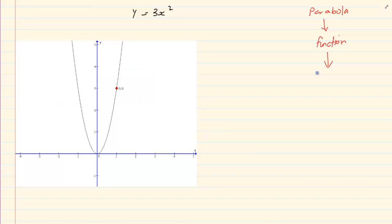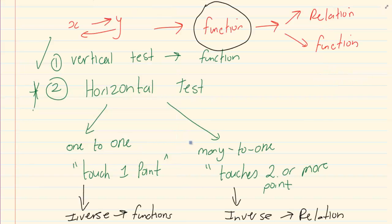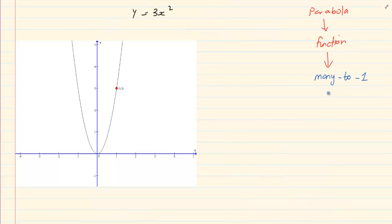When it is touching two points then it is many to one. From our discussion we know that if it is many to one then the inverse is not a function. So when I do the inverse of this parabola I will see that it is a relation — it is not a function.